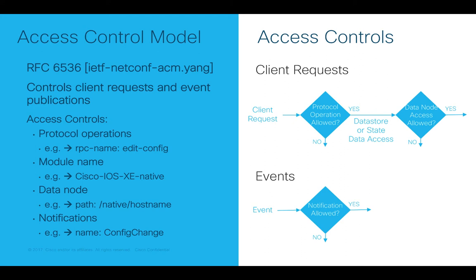In the Access Control Model there are four different ways you can create a rule list. The first one is protocol operation — it is like an RPC such as edit-config, get-config, or delete-config. For example, if you create a rule for get-config for privilege level 5 and that user tries to do edit-config, they will get denied because you set a rule for get-config only. You can set rules for different protocol operations like edit-config, get-config, or delete-config.